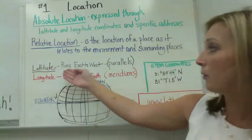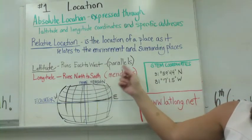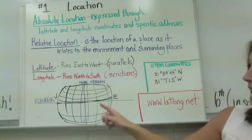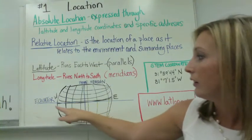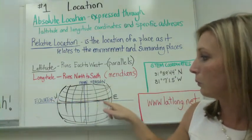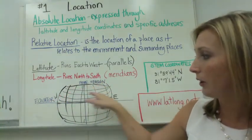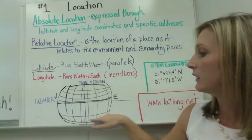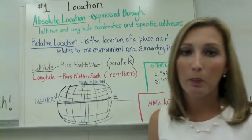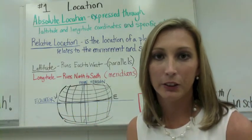Latitude runs east to west. And they're also called parallels. So in this example here, latitude would run along the course of the globe east to west or west to east. And a popular line of latitude is the equator.